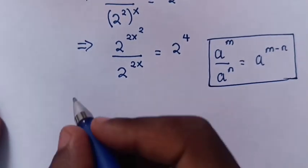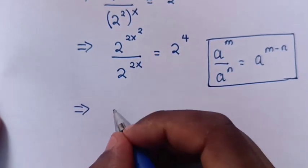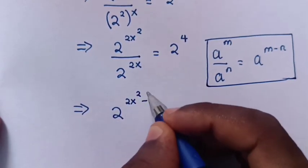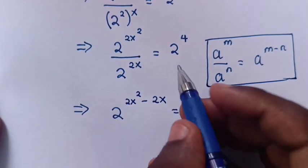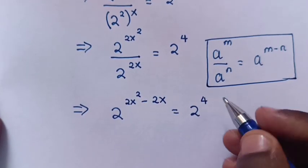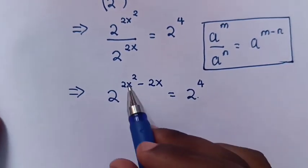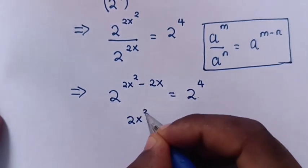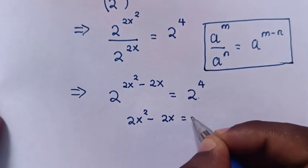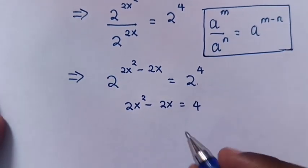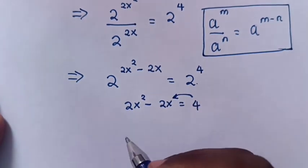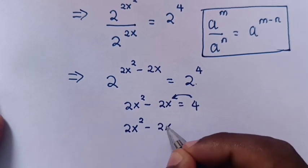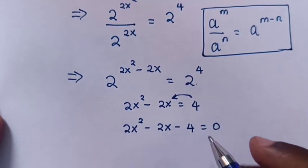So in our equation, it becomes 2 power of 2x squared minus 2x is equal to 2 power 4. Since the bases are the same, we compare the powers: 2x squared minus 2x is equal to 4. We take 4 to the left side, giving us 2x squared minus 2x minus 4 is equal to 0.